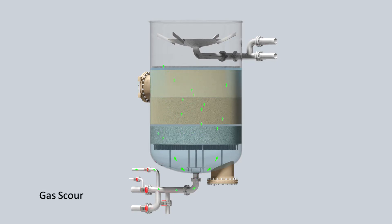Gas scour is part of the cleaning process. The filters are cleaned using feed water quality in the same upflow direction.